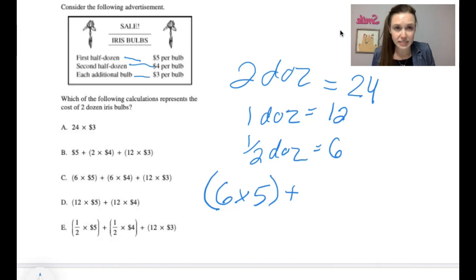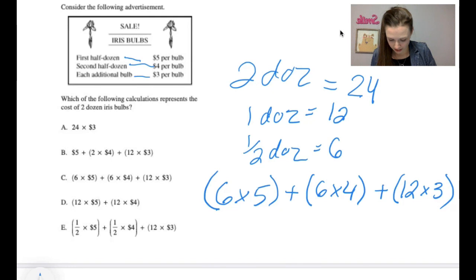The first half a dozen is $5 per bulb. So the first six is going to be 6 times 5 in parentheses. Then the second half a dozen, the second six, is going to be $4 per bulb. And then we add one more, each additional bulb. So far we have 6 and 6 is 12, so we have one dozen. So we have 12 left times that by 3. And when I'm doing an equation like this, I just like to see, do it, and then look, and oh my goodness, looks like C is the answer.